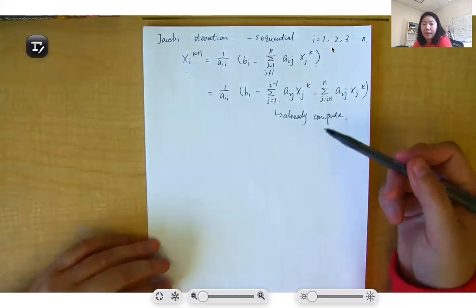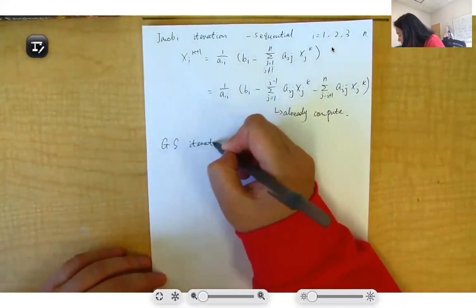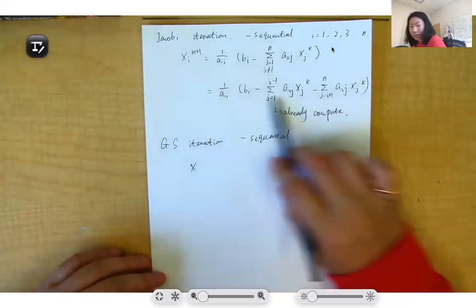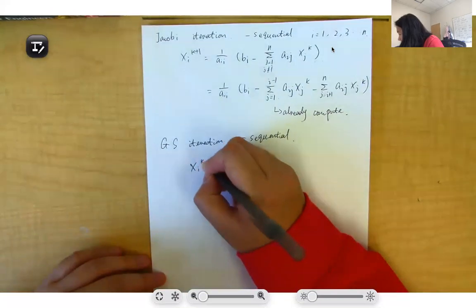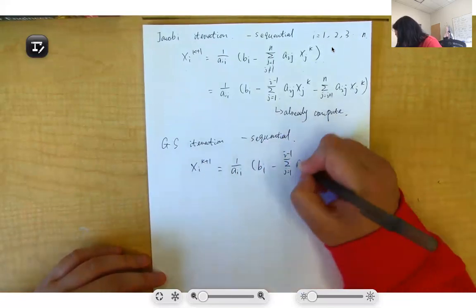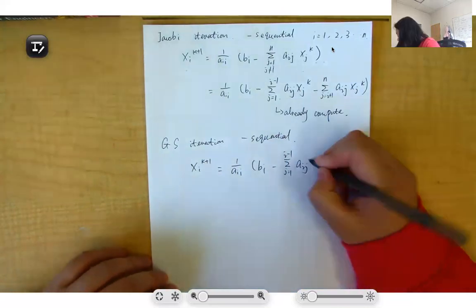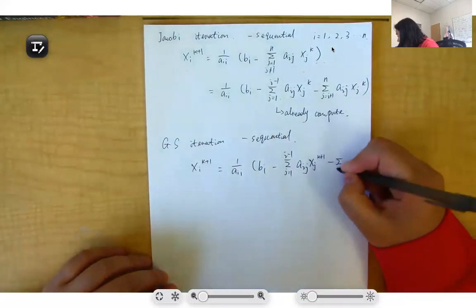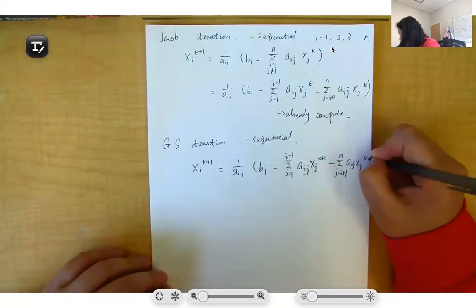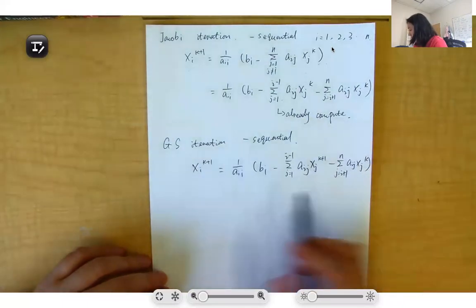For the Gauss-Seidel iteration, you can also write in sequential format. Based on the Jacobi format, x_i^(k+1) equals one over a_ii times b_i, but since x_j^k is already calculated, you can update it with the calculated value x_j^(k+1) for the lower triangular part. For the upper triangular part, from j equals i plus one to n, you still use a_ij times x_j^k because those values haven't been calculated yet. That is the Gauss-Seidel iteration.